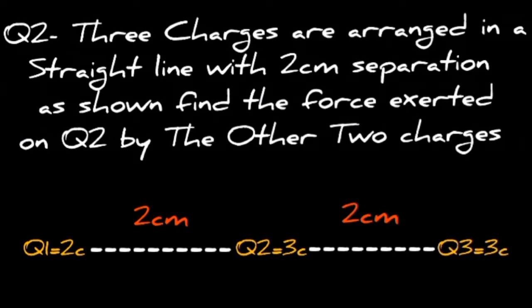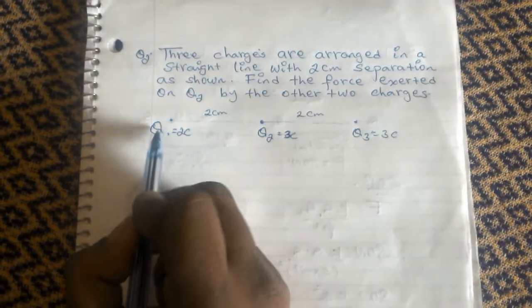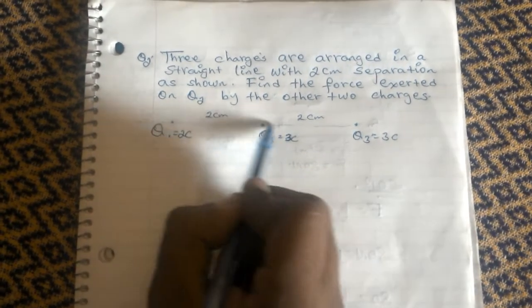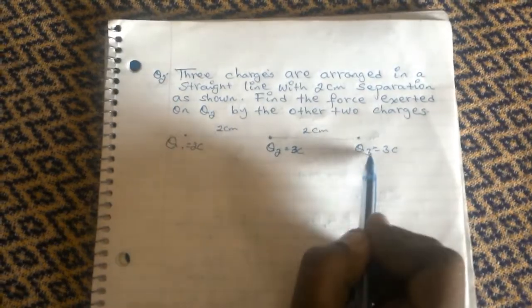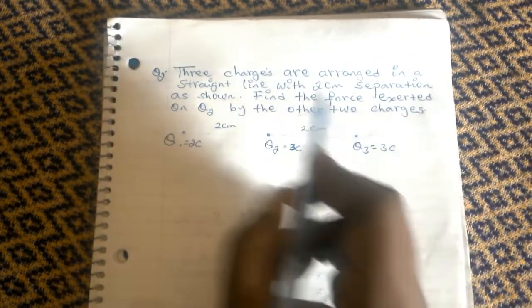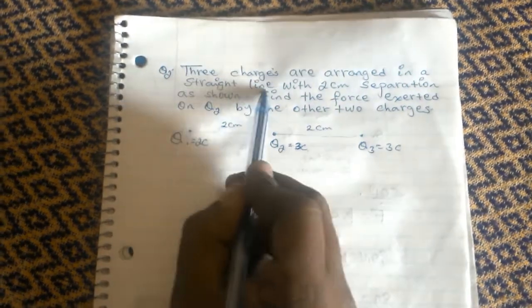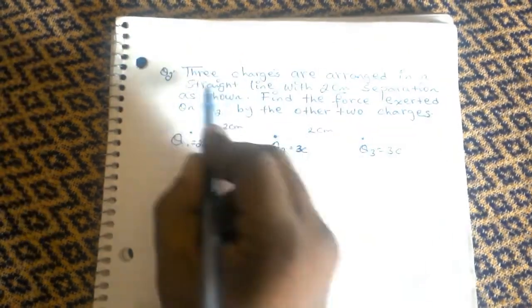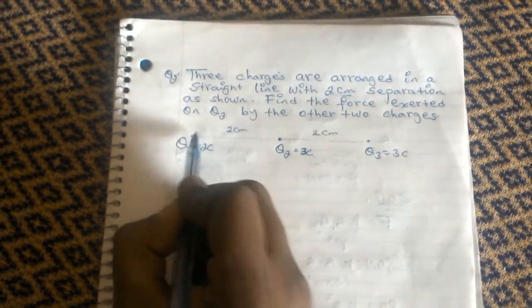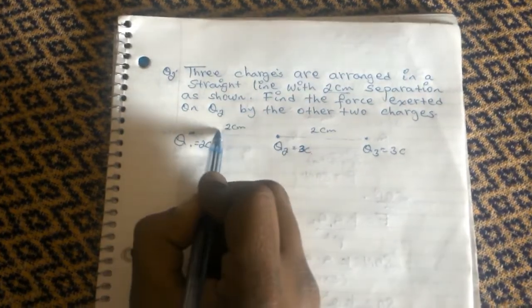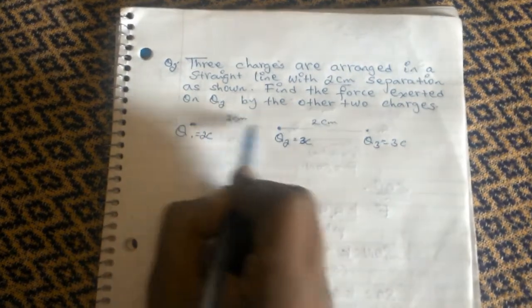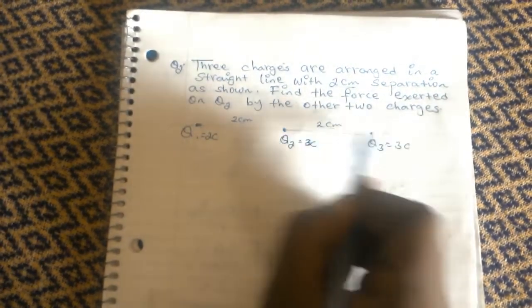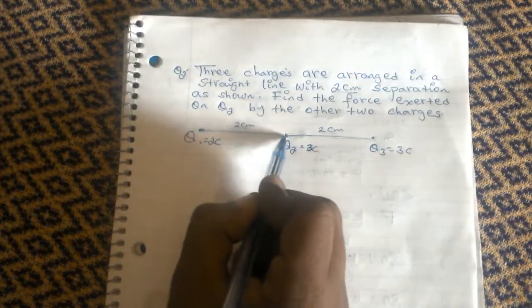The next question says three charges are arranged in a straight line: Q1, Q2, and Q3. They are arranged with a two-centimeter separation as shown. There is a two-centimeter gap between Q1 and Q2, and another two-centimeter gap between Q2 and Q3.